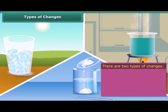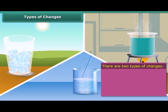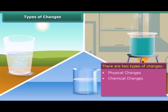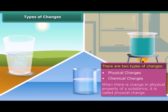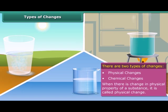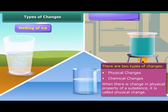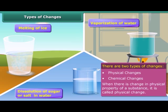Changes are of two types: physical change and chemical change. In this module, you will study physical changes. When there is a change in properties such as shape, size, color, and state of a substance, it is called a physical change. Examples of physical changes are melting of sugar, melting of ice, vaporization of water, and dissolution of sugar or salt in water.